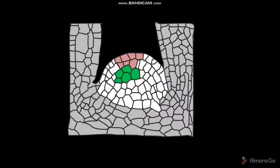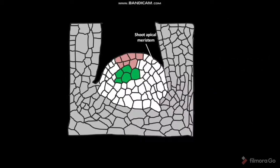These white colored cells, along with the light pink colored and green colored cells, are called the shoot apical meristem of a plant. The light pink colored cells in the outer layer of the meristem are secreting the ligand Clv3 peptide. Adjacent to these light pink colored cells, some green colored target cells are present.